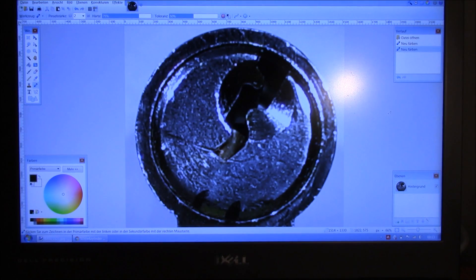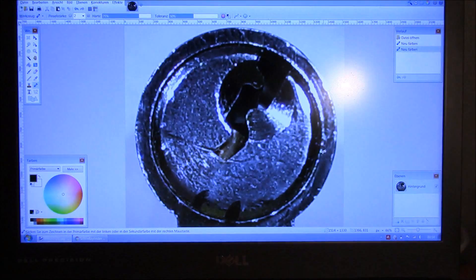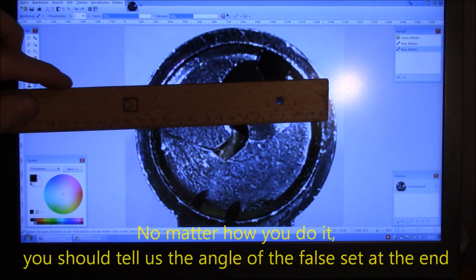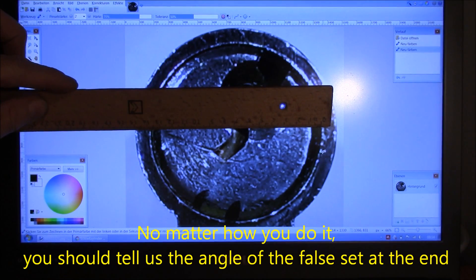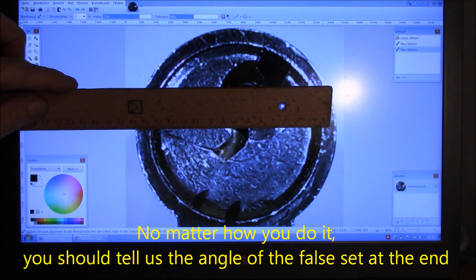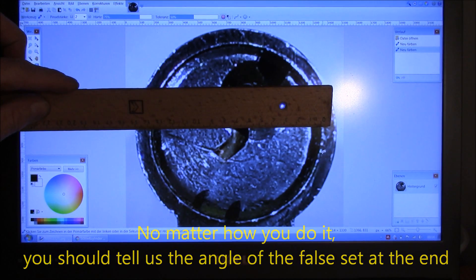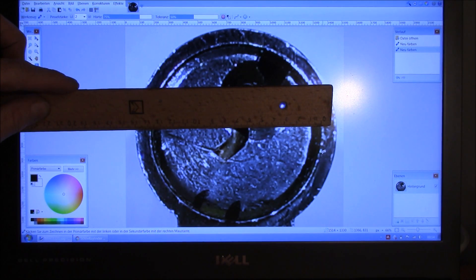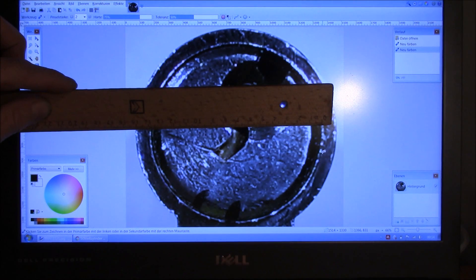But there is another way which requires some mathematical effort. Not too much, but at least a little bit of it. And therefore we need two numbers. First is the diameter of the plug. And you can measure that from the screen. It doesn't matter which magnification level you have applied.